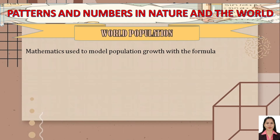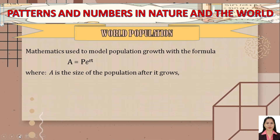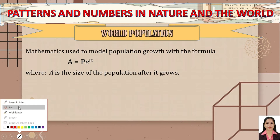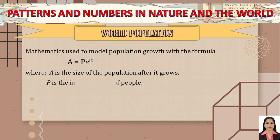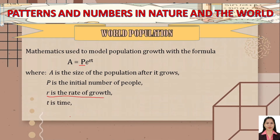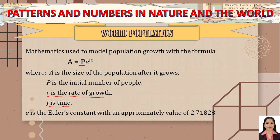Mathematics is used to model population growth with the formula A = Pe^(rt), where A is the size of the population after growth or the future population, P is the initial number of people, r is the growth rate, and t is the time or period.